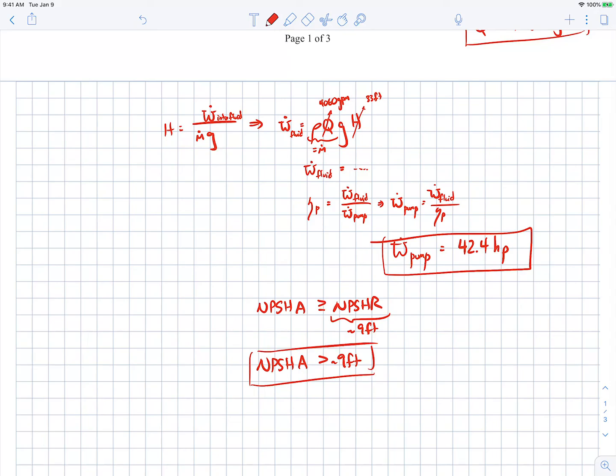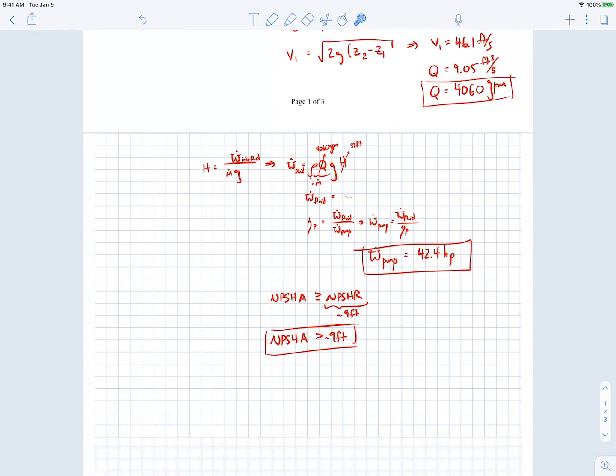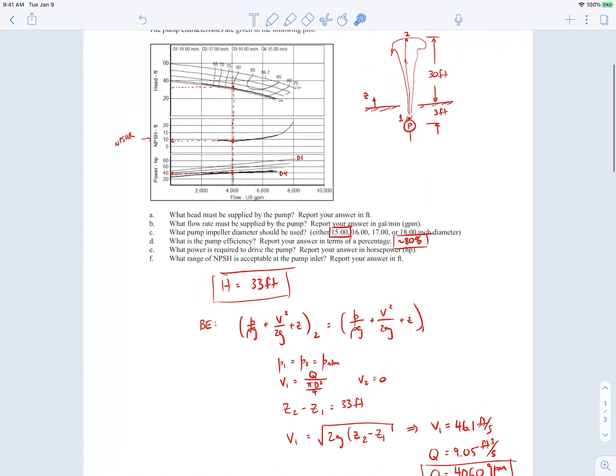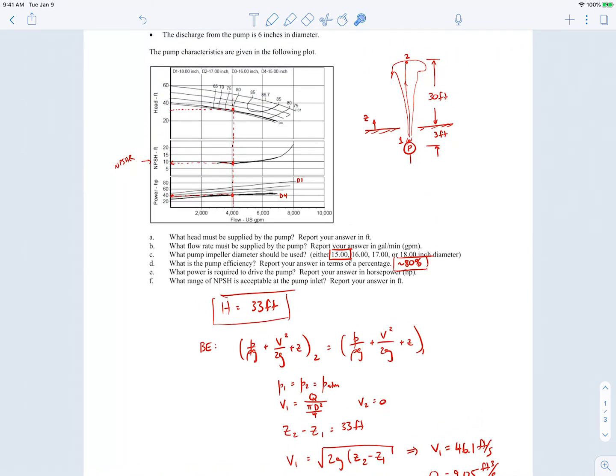So the NPSH A that we have to supply to that pump should be ideally greater than about nine feet. We just need to make sure that our pipe system is set up such that we have more than nine feet of head, or at least nine feet of NPSH A leading into the pump so we can avoid any cavitation. So that's it for this example. It's pretty straightforward for the most part.